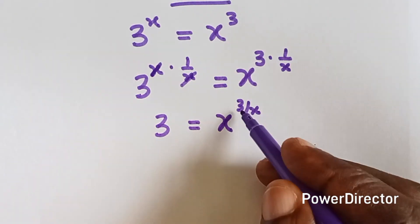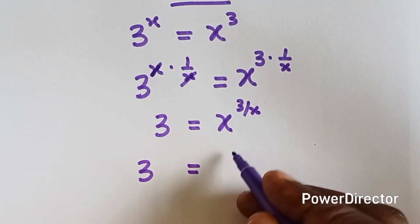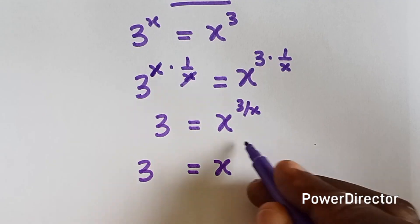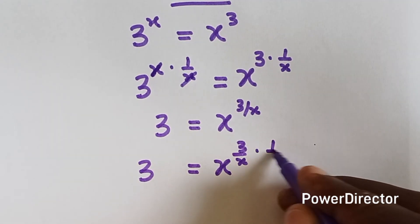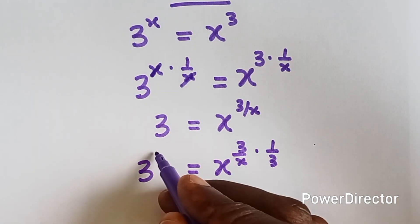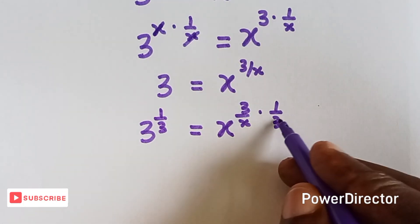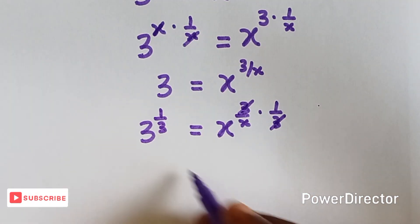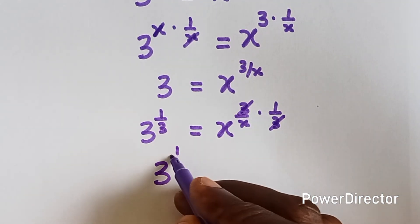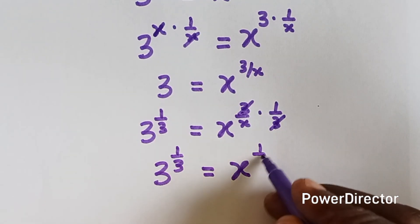So now let's cancel out this 3 by multiplying the powers by 1 over 3. So we have x raised to power 3 over x. Let's multiply this by 1 over 3. And don't forget what you do here, you have to do here too. You multiply this by 1 over 3. So now the 3 here, we cancel this. So we have 3 raised to power 1 over 3 equals to x raised to power 1 over x.